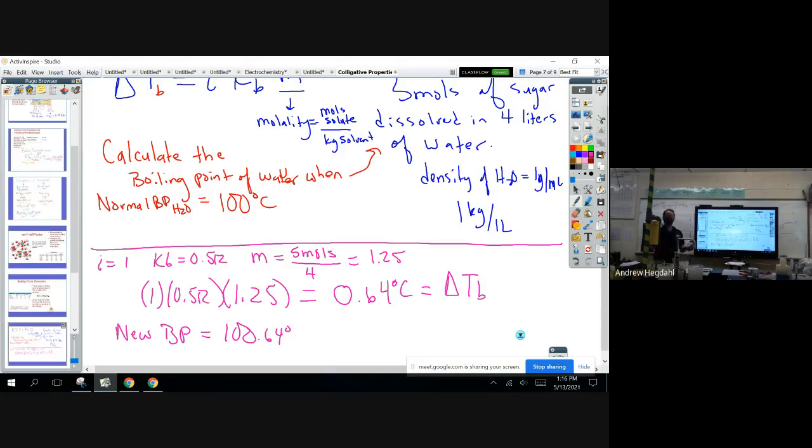When we do freezing point depression, it works the same exact way, except we'll just have a different constant here. It'll be for freezing. I think it's 1.18, but we'll cross that bridge tomorrow when we do it. Easy, or makes sense? We have an example to go from? All right, so now let's look at the lab and get you going on that.